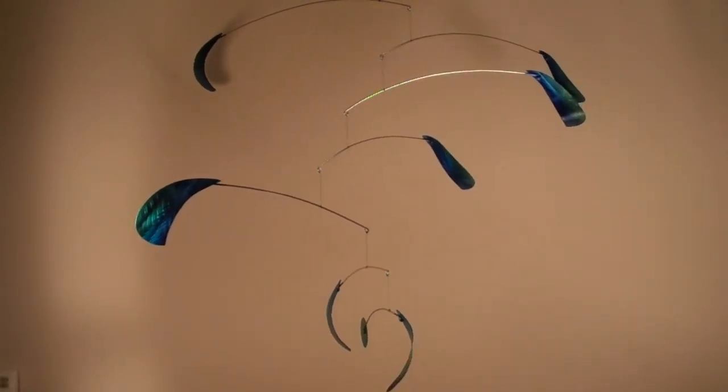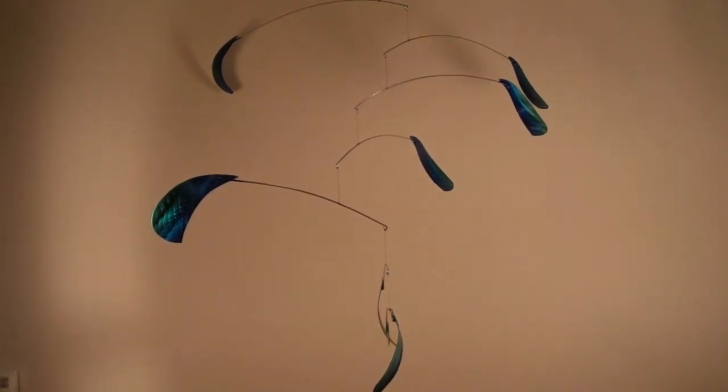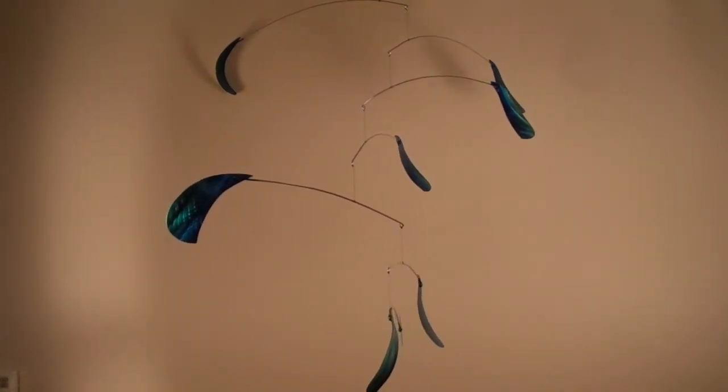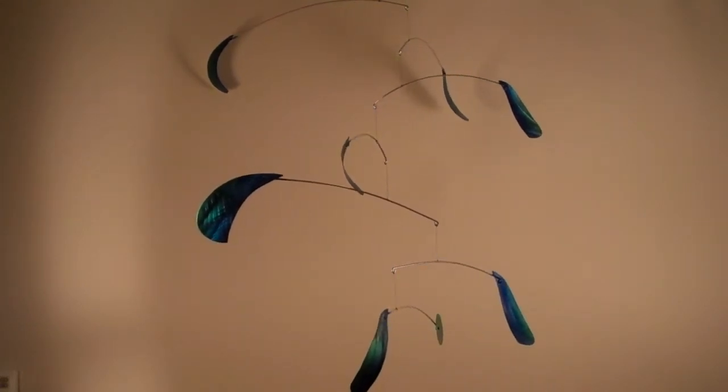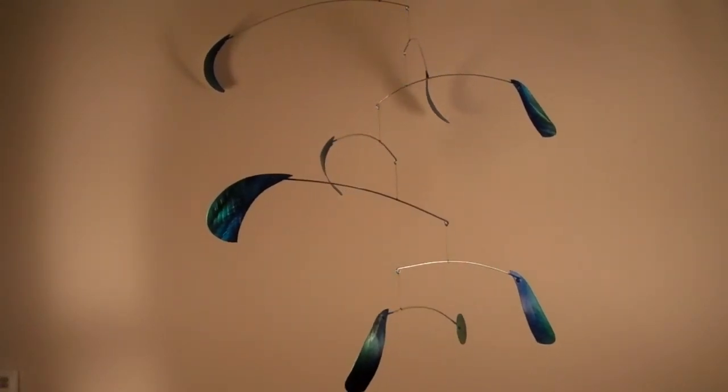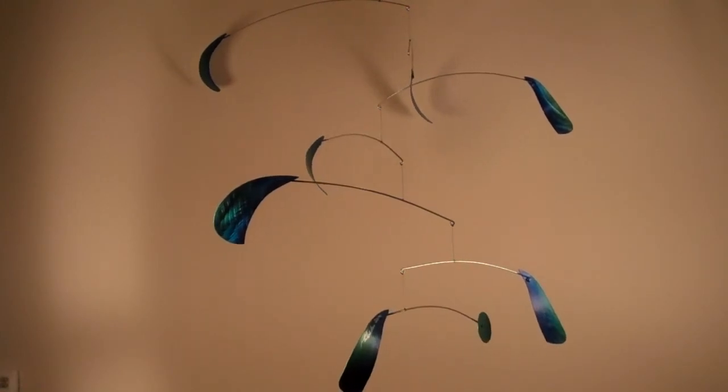Again, the mobile comes completely assembled and is in a much smaller shipping box than you would expect, and all you have to do is take it out and hang it up and enjoy the movement and color of this beautiful Hotchkiss mobile.